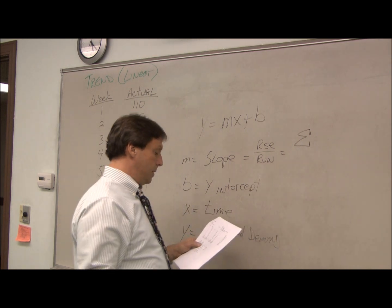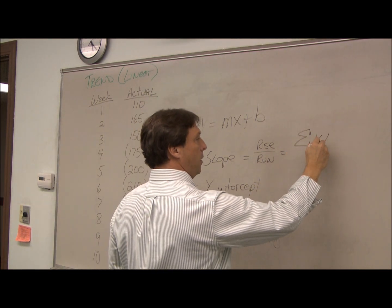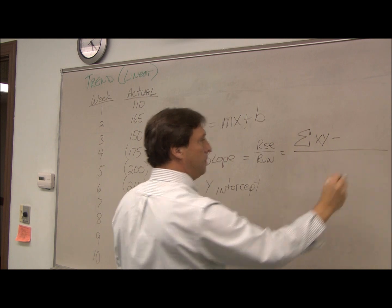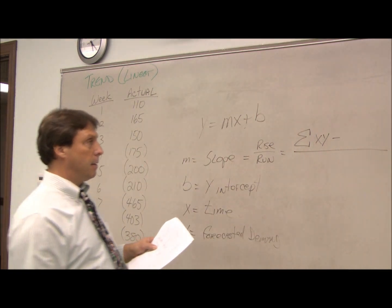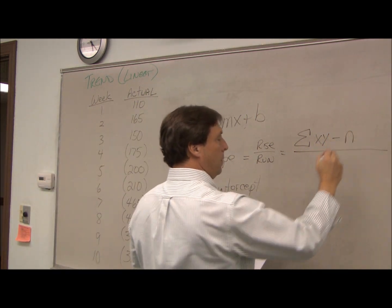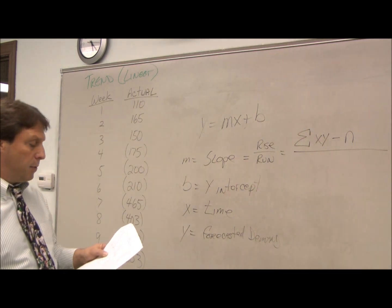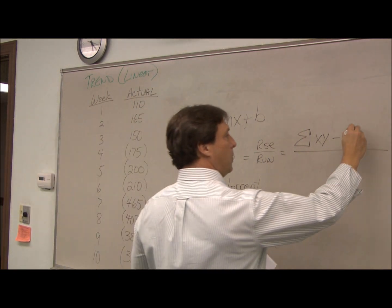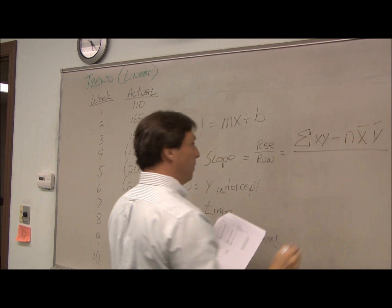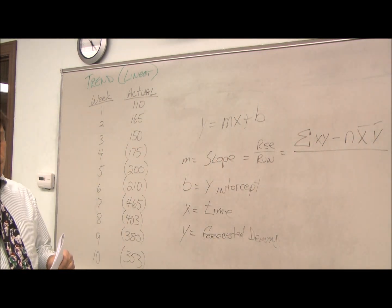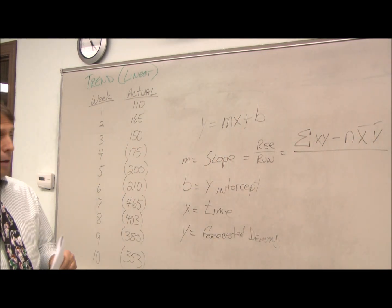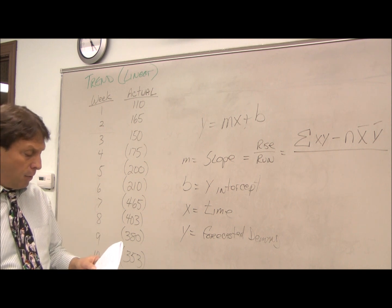Which is the summation of our x and our y's minus the number of periods we go through times what's called x-bar times y-bar. And x-bar and y-bar are your averages of your x and your y's.